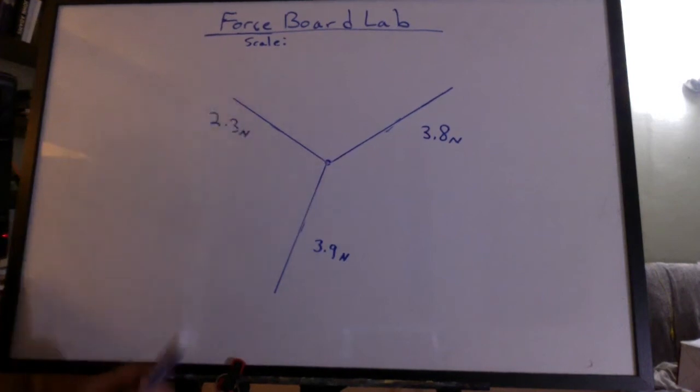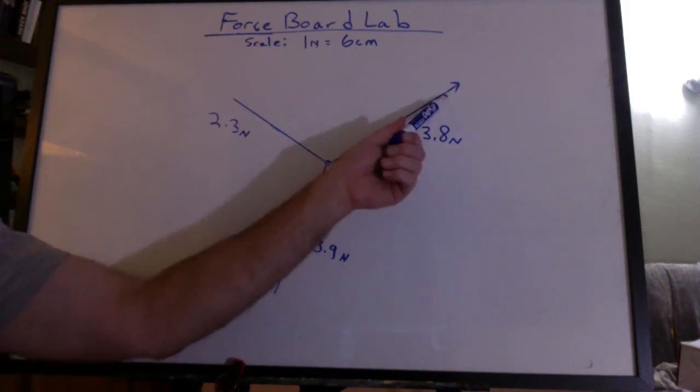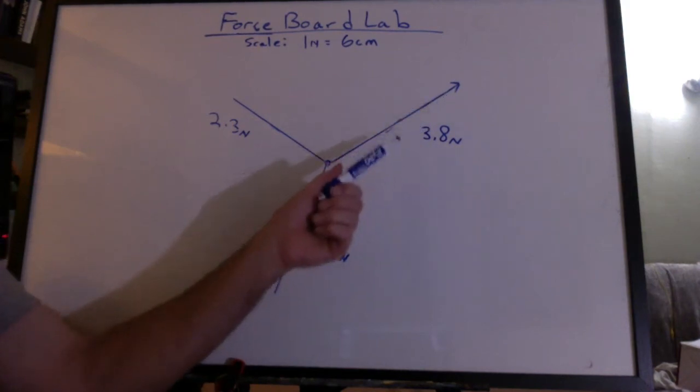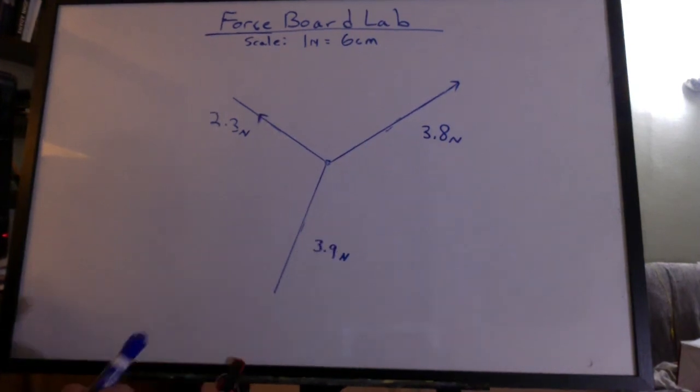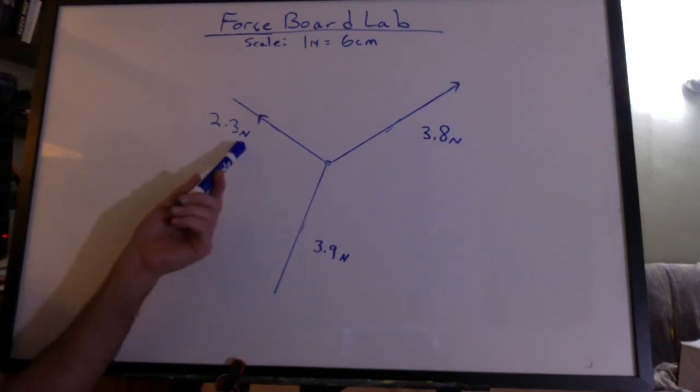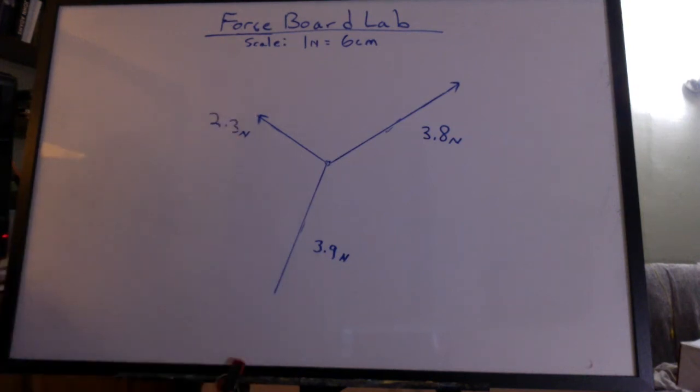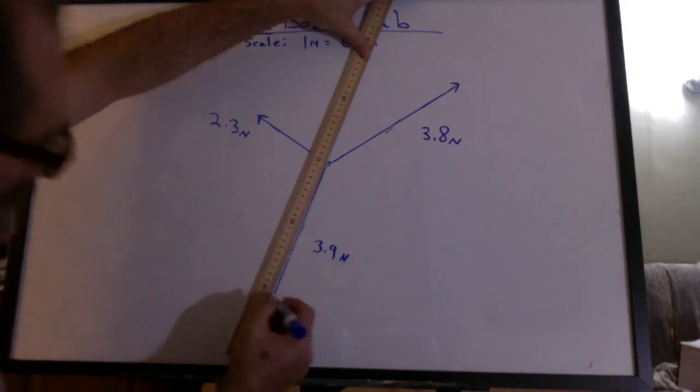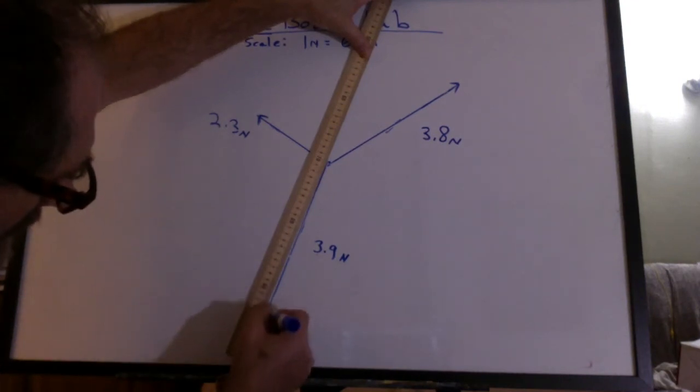I'm going to set a scale. Every Newton on the spring scale will be represented by six centimeters on the board. This one worked out real close to the original length of the line I drew, just by luck. That works out to be 22.8 centimeters. This one worked out to be 13.8 centimeters. So the line I drew was a little long. And the last line turns out to be 23.4, which is right here.